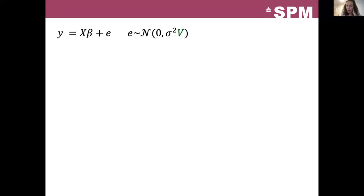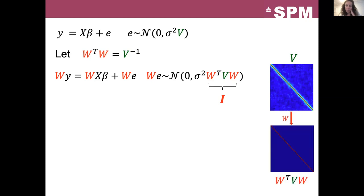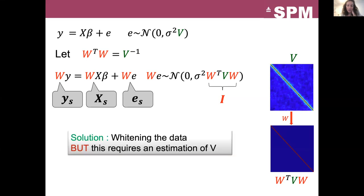Let's go back to our model. Now the error term has a correlation matrix V. And let's define W as the square root of the inverse of this covariance matrix V. Let's then apply W to both sides of the model. The autocorrelation matrix of this new error term is now equal to the identity matrix. So the OLS estimator can now be applied to this new model that restores the validity of the hypothesis of independent terms in the error term. This solution is called pre-whitening of the data and it looks simple, but it requires the difficult estimation of V, the covariance matrix.